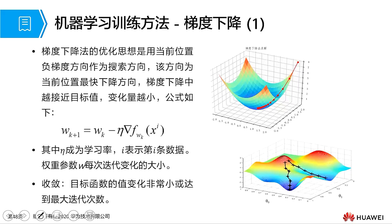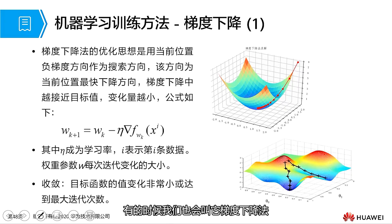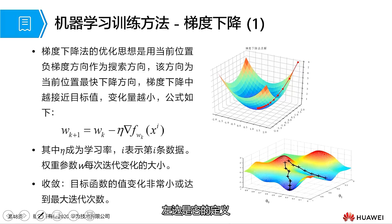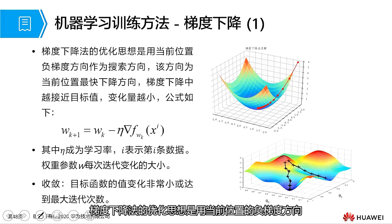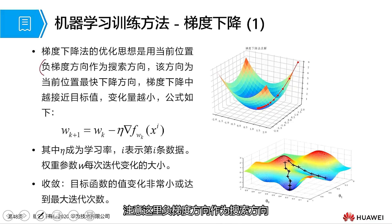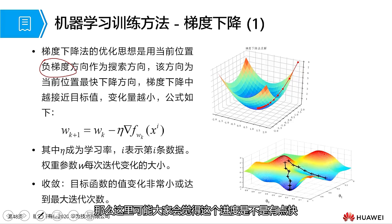The first concept is gradient descent — sometimes we also call it the gradient descent method. This is a training method for machine learning. The optimization idea of the gradient descent method is based on the negative gradient direction of the current position. The negative gradient direction serves as the search direction, and this direction is the fastest descent direction from the current position.